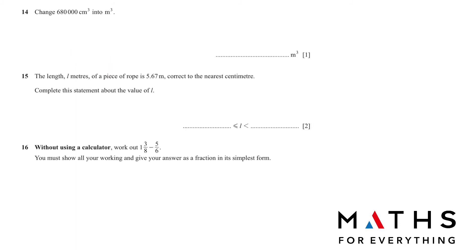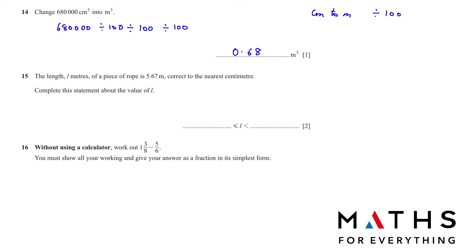Question 14: change 680,000 cubic centimetres into cubic metres. To change from centimetres to metres we divide by 100. Whenever you change a small unit to a bigger unit you always divide. Because it is cubic (to the power of 3), we divide by 100 three times. That gives the answer 0.68 cubic metres.